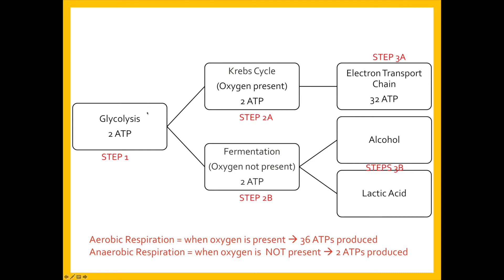If oxygen is present after glycolysis, you will have the Krebs cycle, where you make two additional ATP. After the Krebs cycle you move on to the electron transport chain, where you make an additional 32 ATP. That gives you a total of about 36 ATP.